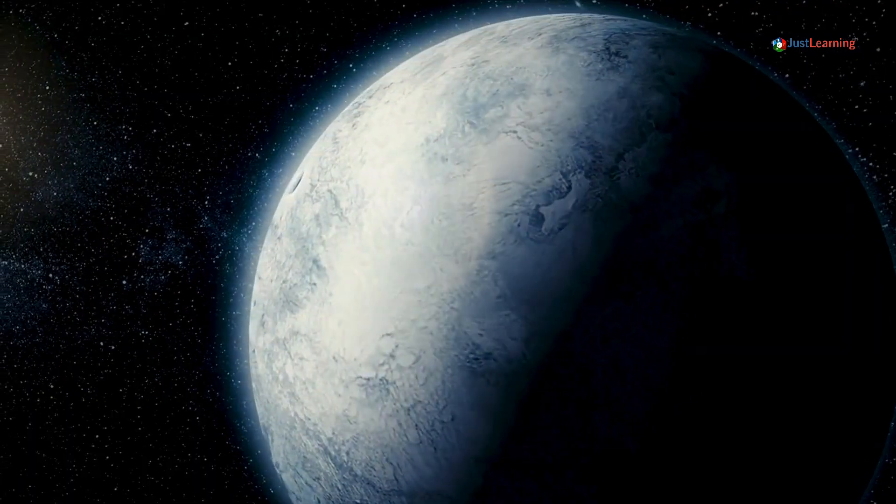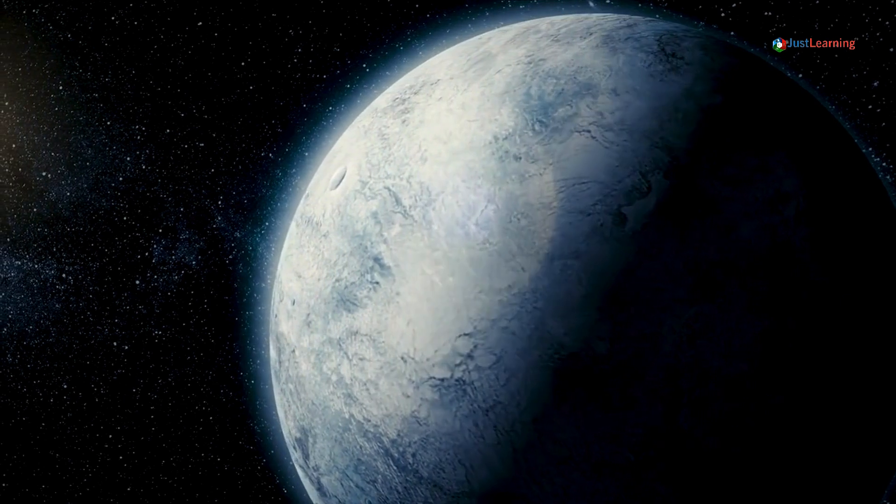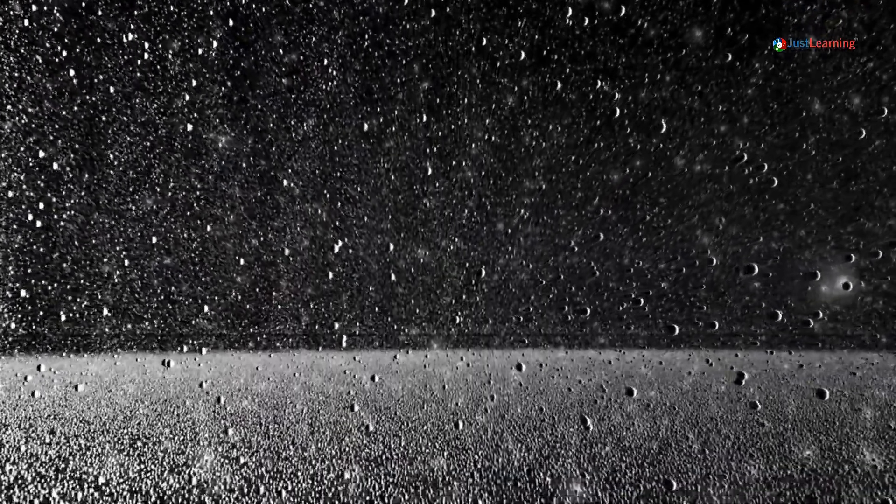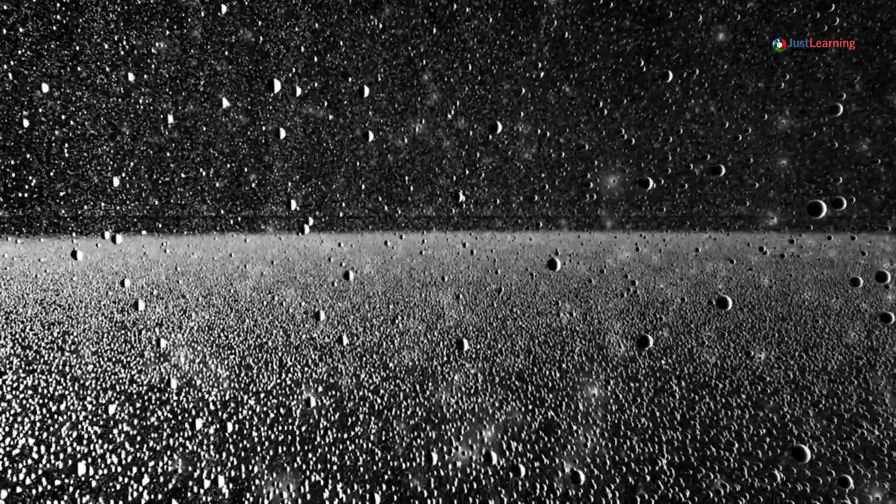There are more than 700 known natural satellites in the solar system. However, as we have seen, this number is likely to grow significantly in the future.